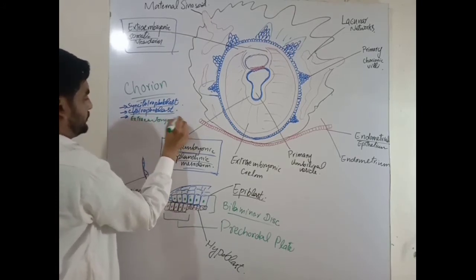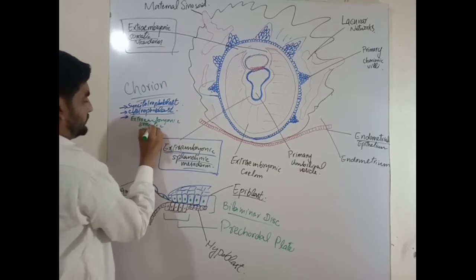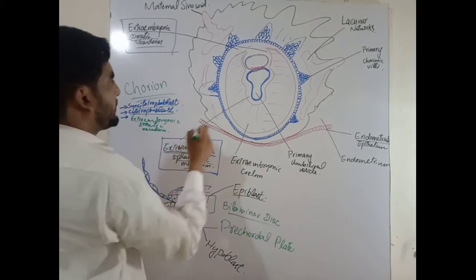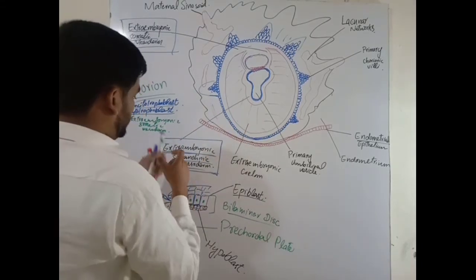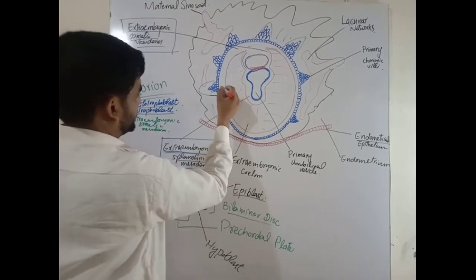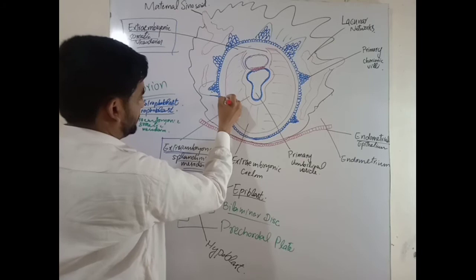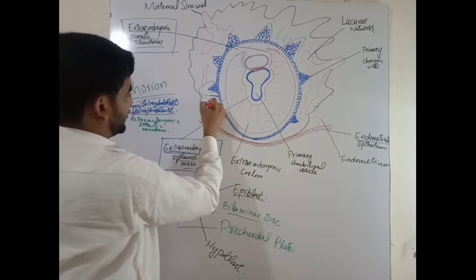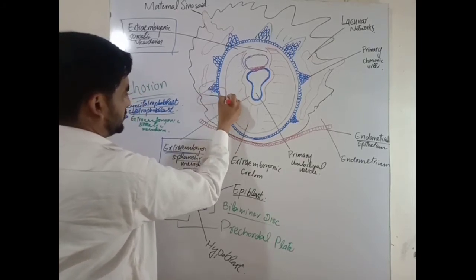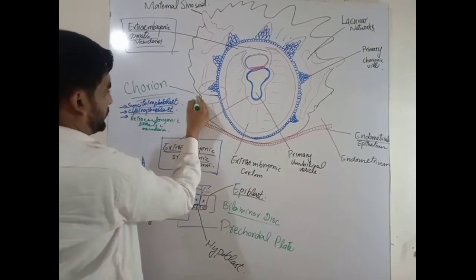The extra-embryonic somatic mesoderm is also included in the chorion. So the chorion contains the mesoderm, cytotrophoblast, and syncytiotrophoblast. This entire structure is the chorion.